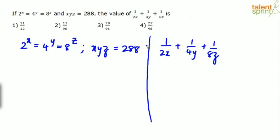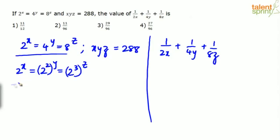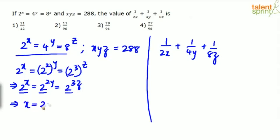Express everything in base 2: 2^x = (2²)^y = (2³)^z, giving 2^x = 2^(2y) = 2^(3z). Since the bases are all equal, we can compare powers directly: x = 2y = 3z.